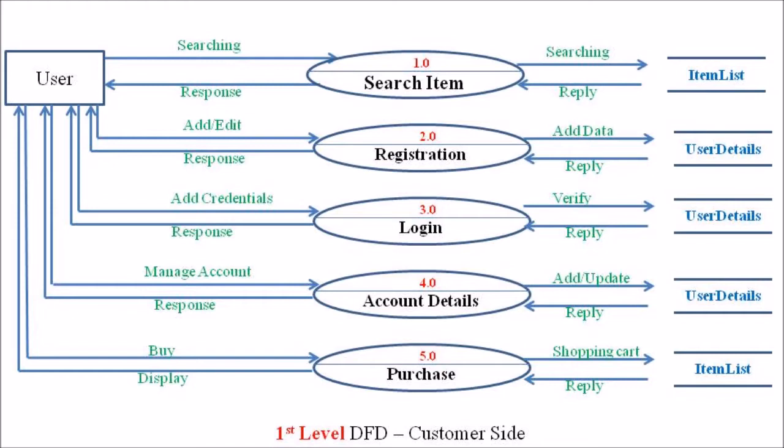Those five processes are: first, search item; second, registration; third, login; fourth, account detail; and fifth, purchase.